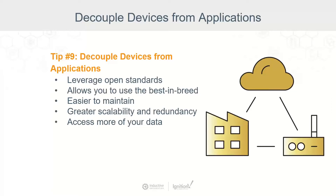Decoupling applications from devices makes real scalability possible because it lets you access all the device data that was directly coupled to a single application or stuck in the field. It provides a single source of truth for all your tags, and it eliminates the need to use SCADA software as middleware. It makes it possible to replace individual devices as necessary without having to replace everything else.